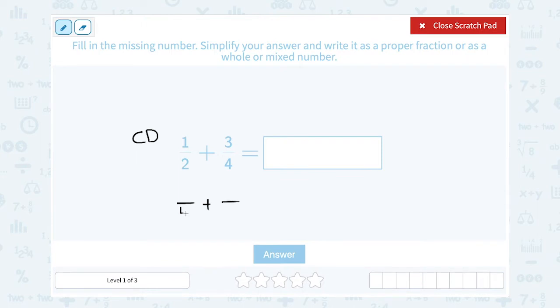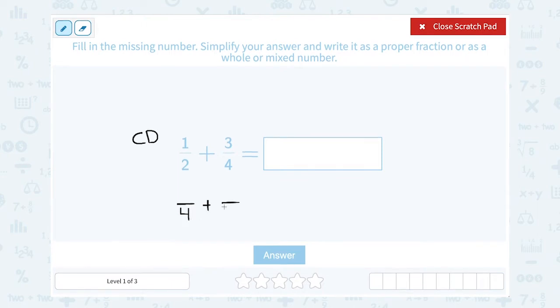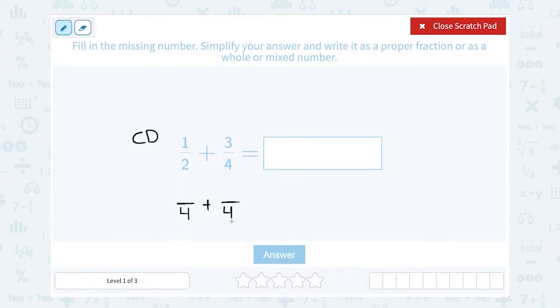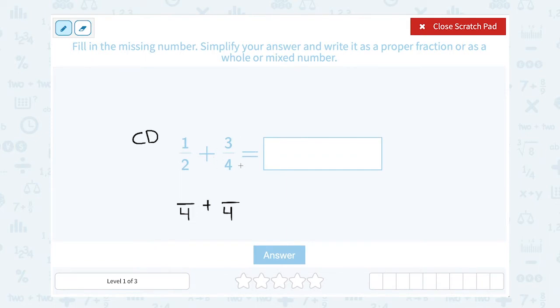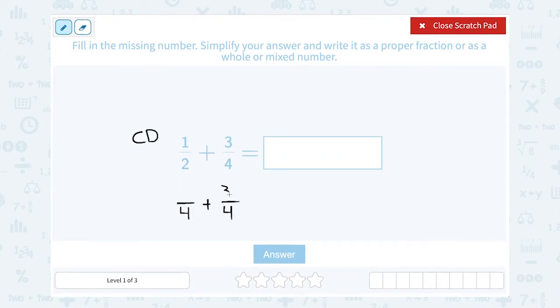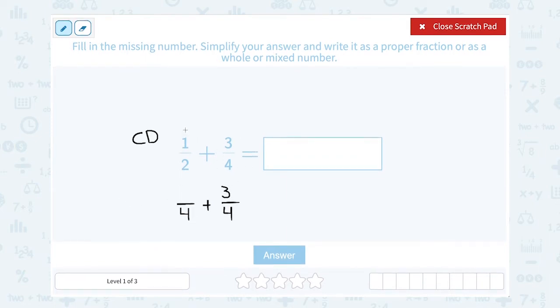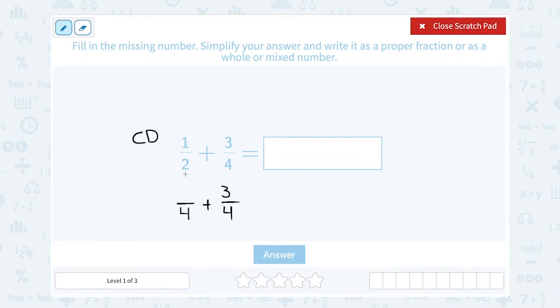So that means I can use four as my common denominator. Now the second fraction was already three over four, so I don't need to change that one at all. The first fraction was originally one-half, so this one I have to change around a little bit.